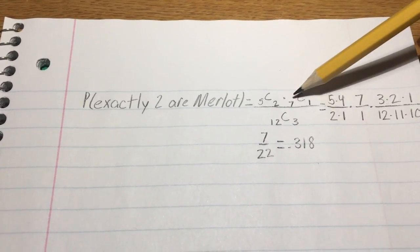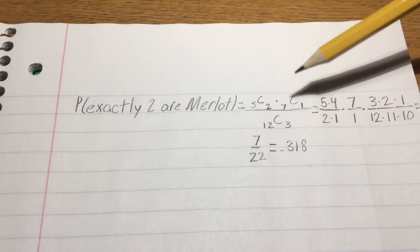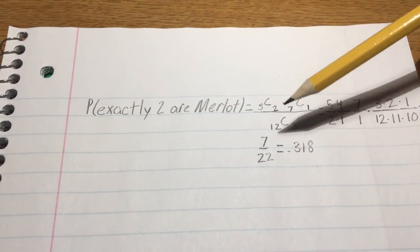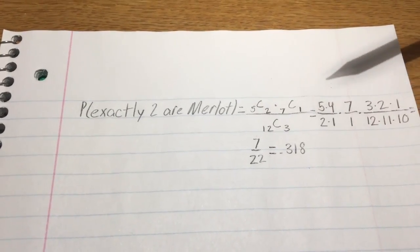The entire equation is divided by the permutation of three wine bottles being randomly selected from the case of 12.